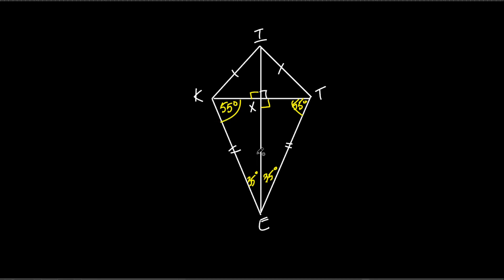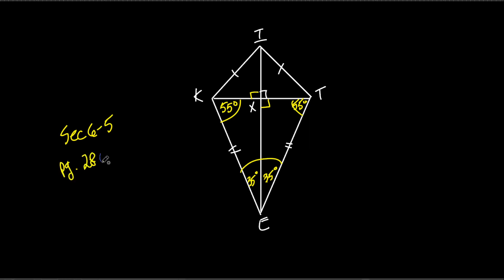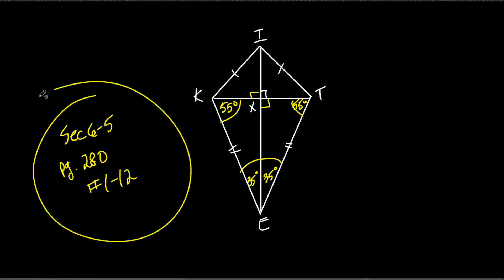They do ask for angle KET. That's easy — it's 70 degrees. So your assignment is section 6.5, page 280, problems 1 to 12 tonight.